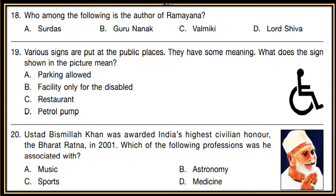Question 19: Various signs are put at public places and have specific meanings. What does the sign shown in the picture mean? Options: parking allowed, facility for the disabled, restaurant, or petrol pump. Question 20: Ustad Bismillah Khan was awarded India's highest civilian honor, the Bharat Ratna, in 2001. Which profession was he associated with? Options: music, astronomy, sports, or medicine.